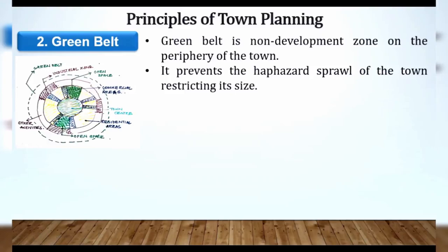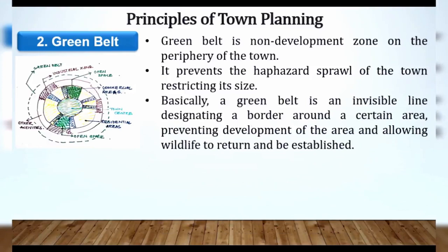A green belt is an invisible line designating a border around a certain area. It's a fixed line nahi hai — bas ek green area mein hum ek border fix kar rahe hain jo prevent karega development of the area and allowing wildlife to return and to be established. Green means, as the name says, green area maintain karega — yahan par aisa kuch hoga jahan par development nahi honi chahiye.